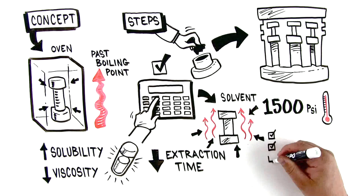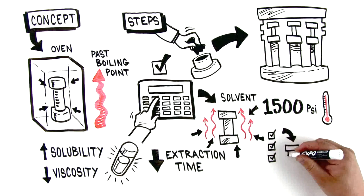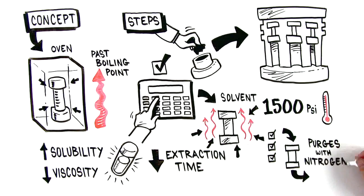Next, the sample can be allowed to sit exposed to solvent for a predetermined amount of time. This is referred to as a static extraction. Once the static extraction is complete, the system pumps fresh solvent through the cell and pathway and purges with nitrogen.